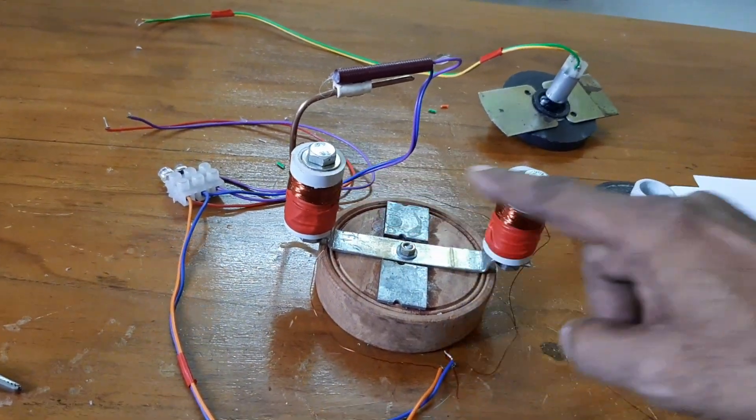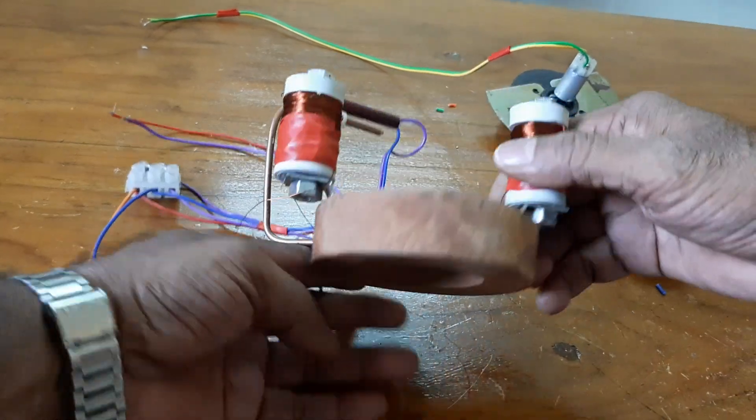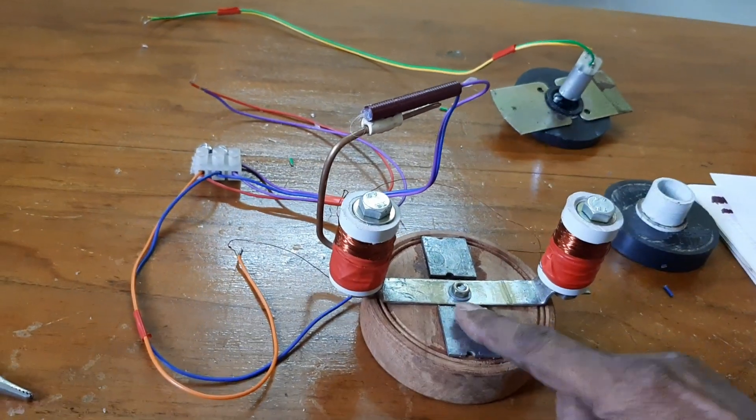These are the two electromagnets and this is a round block for base.